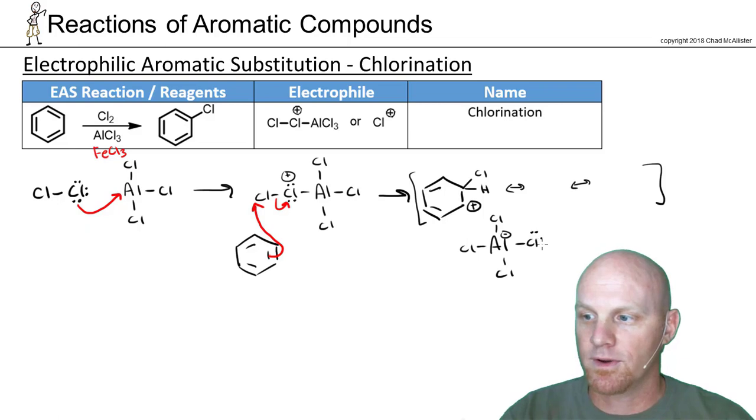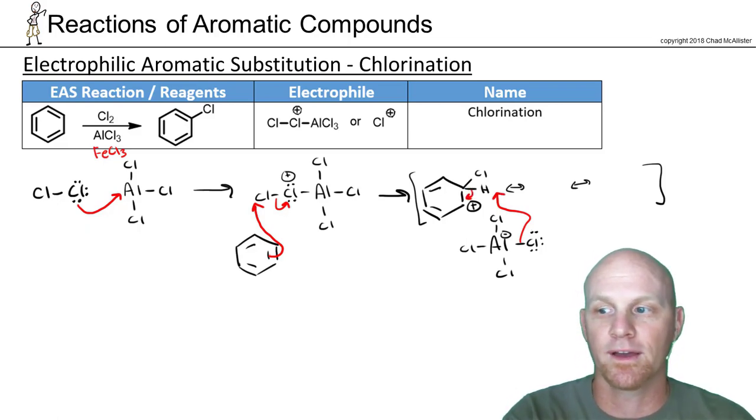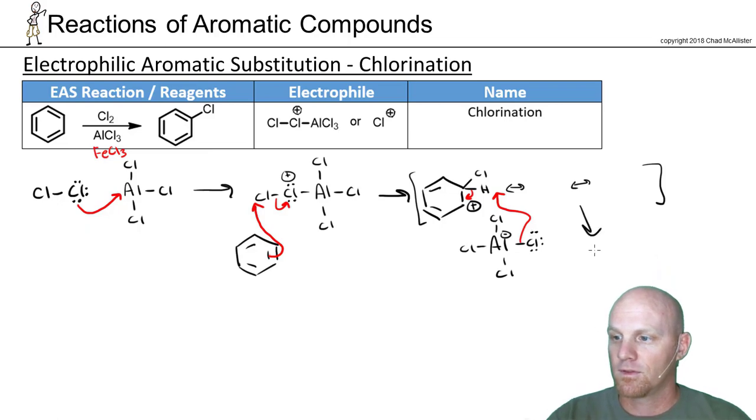One of these chlorines is going to break off, it doesn't really matter which one we choose, and act as the base and come and deprotonate so we can restore aromaticity to our ring. Our ring now has a chlorine instead of the hydrogen. The substitution is complete. We've also formed a molecule of HCl, and we've also reformed our AlCl3 catalyst back.